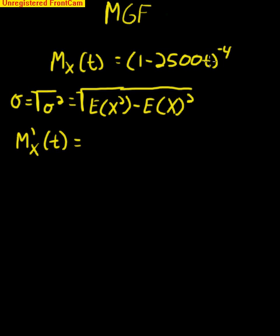This is a chain rule problem. We're going to take this down here, we're going to get negative 4 times the derivative inside of here. The derivative of this with respect to t is going to be negative 2500. Negative 2500 times negative 4 is going to be 10,000. Then we just take the derivative of this and we get the following.